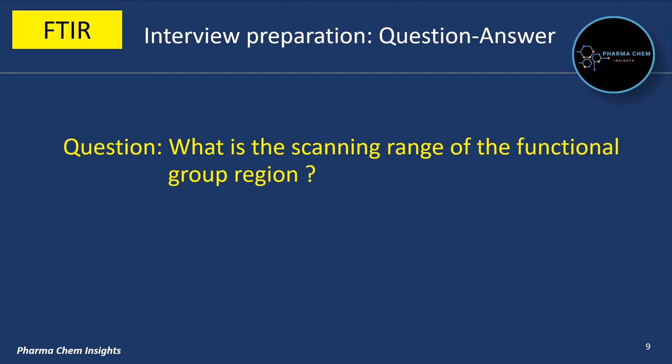What is the scanning range of the functional group region? The scanning range of the functional group region is 4000 cm⁻¹ to 1500 cm⁻¹.